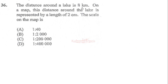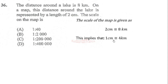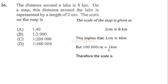Item 36: the distance around a lake is 8 kilometers. On a map, this distance is represented by a length of 2 centimeters. So 2 centimeters represents 8 kilometers, which reduces to 1 centimeter representing 4 kilometers. Since 100,000 centimeters equals 1 kilometer, 4 kilometers equals 400,000 centimeters. Therefore the scale of the map is 1 centimeter to 400,000 centimeters.